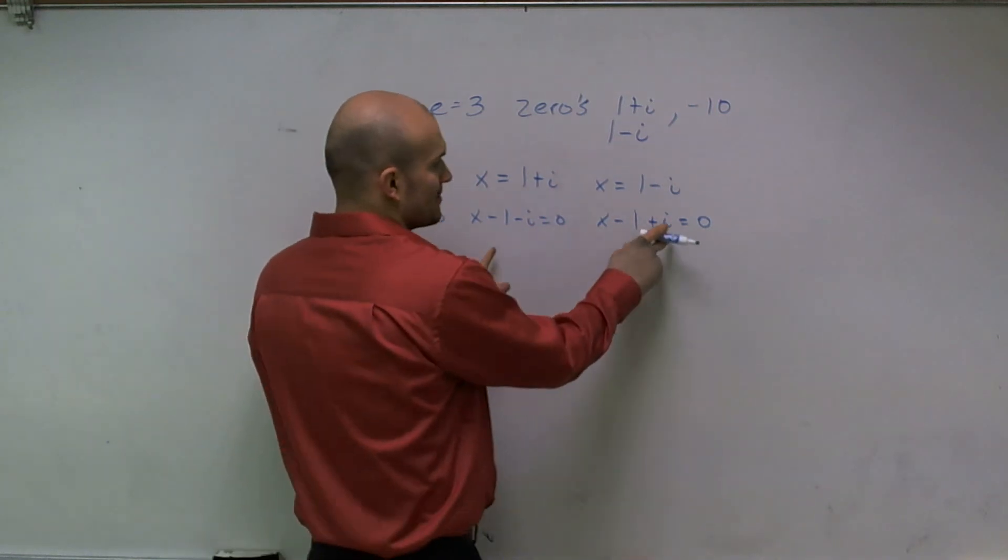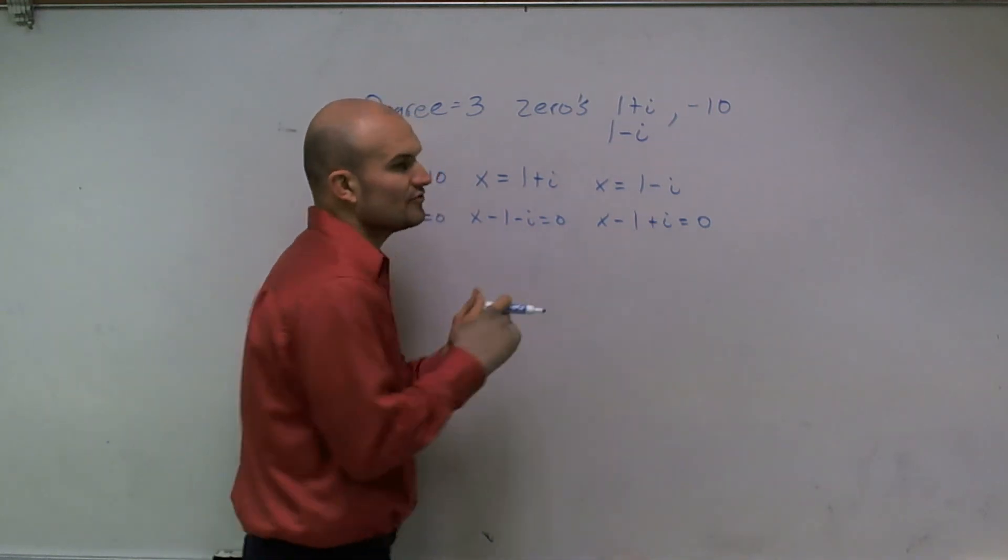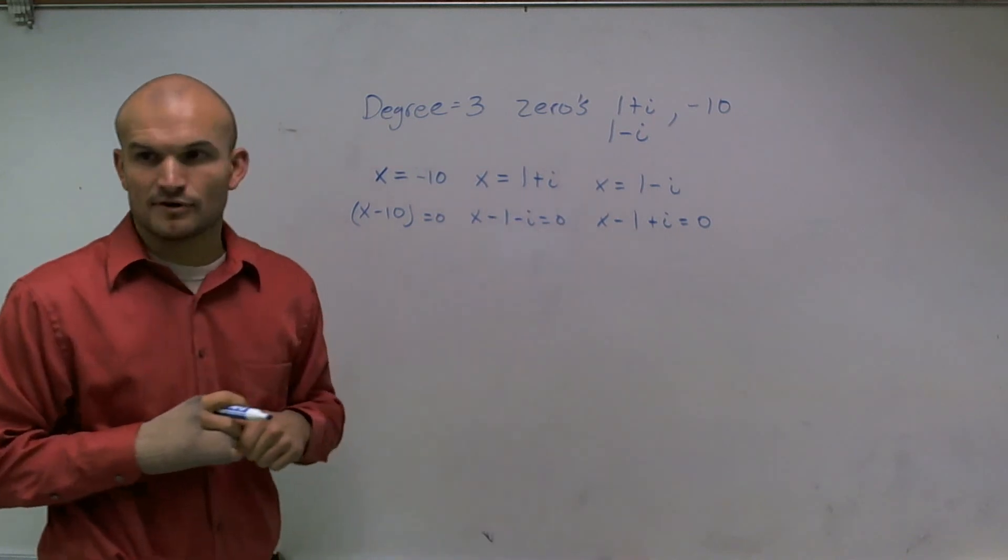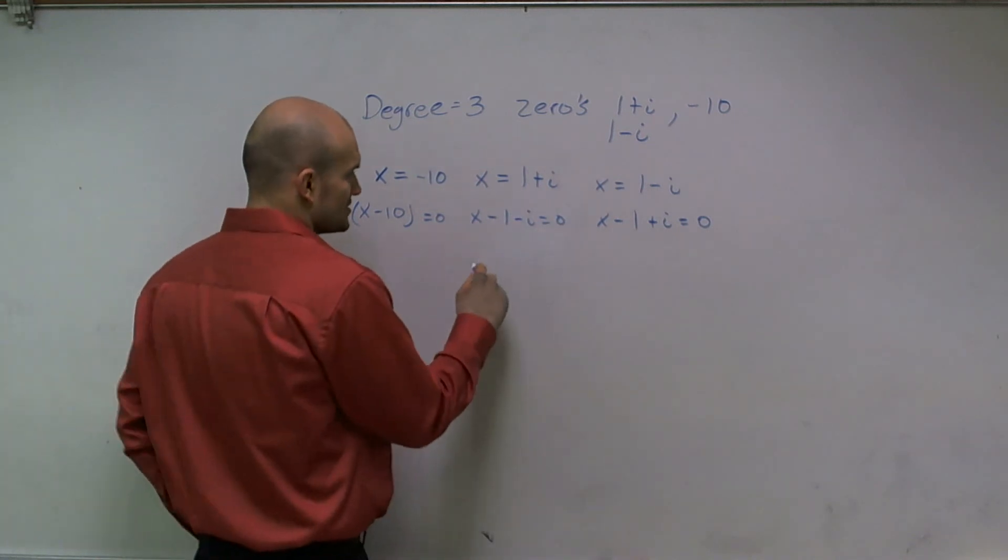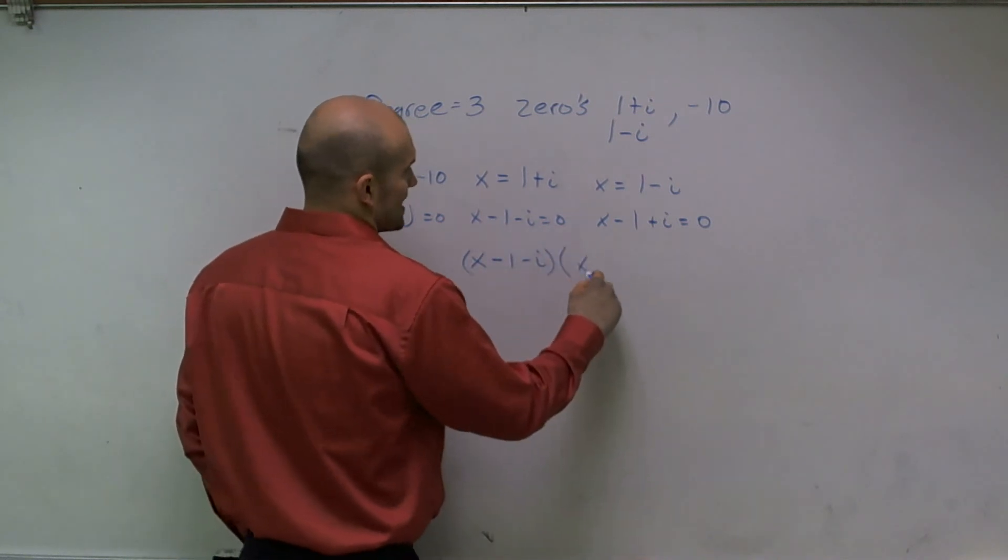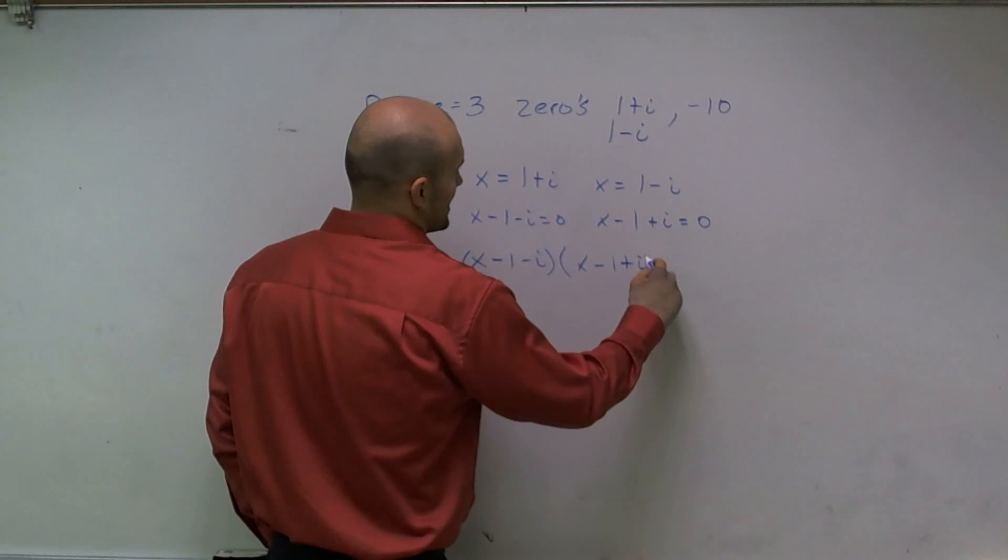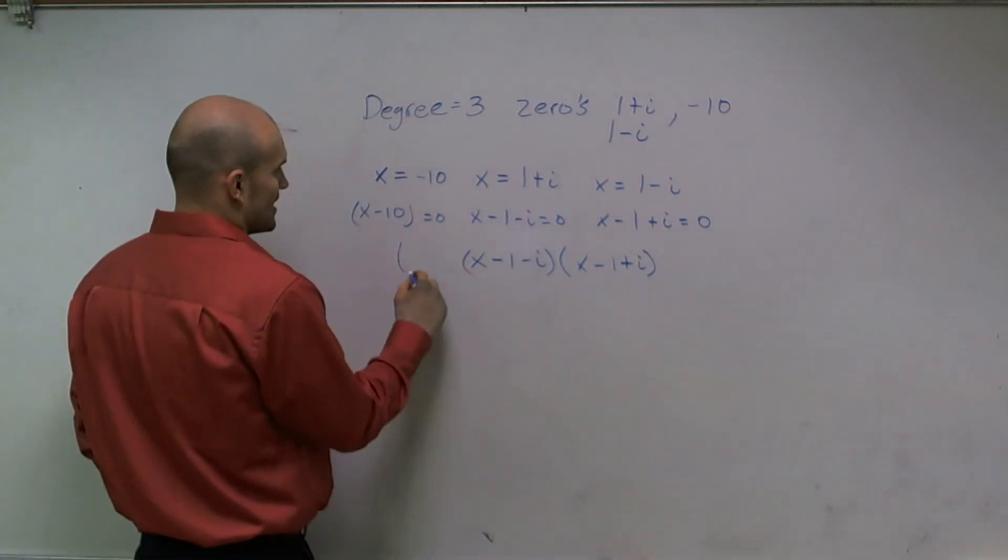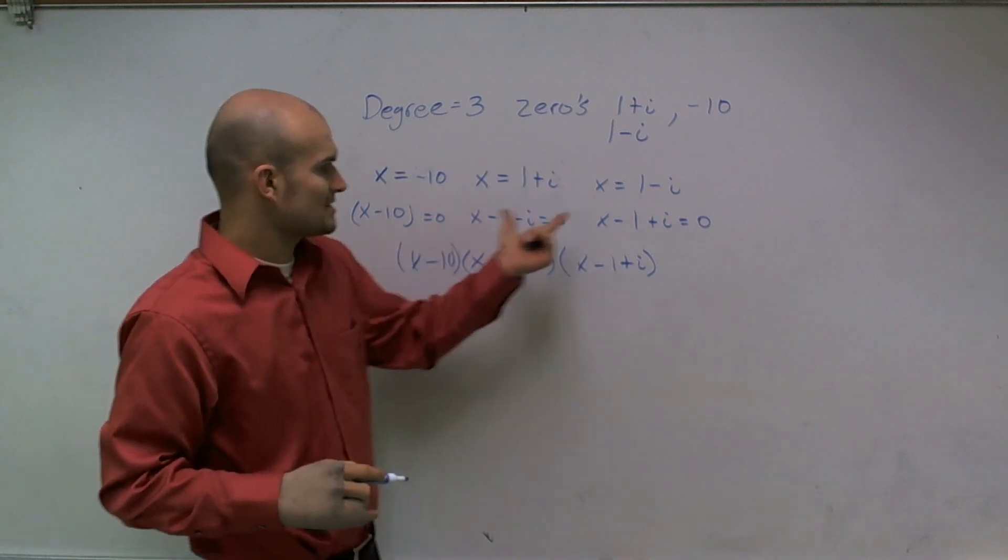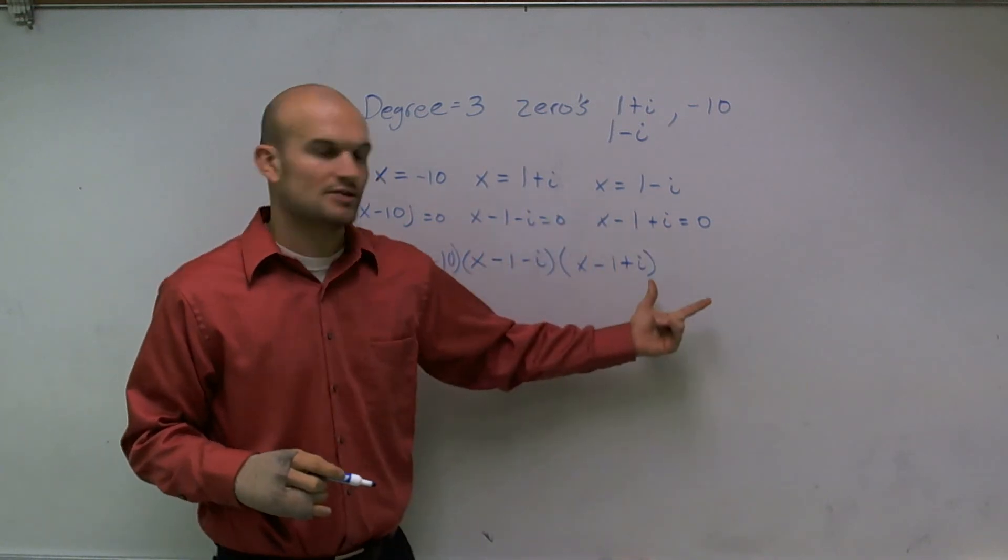All right, so now what we're going to do is we need to figure out, well, I need to multiply all of my factors by each other. So the first thing I'm going to do is I'm going to worry about multiplying my two factors that are complex, because that looks like it's going to be some difficult stuff to worry about, right? So let's do that.